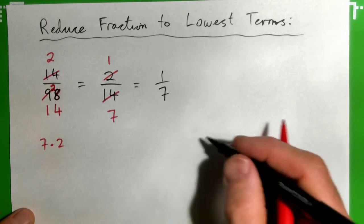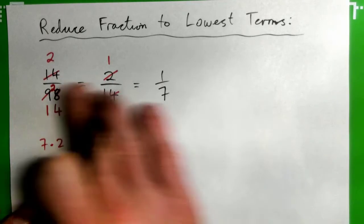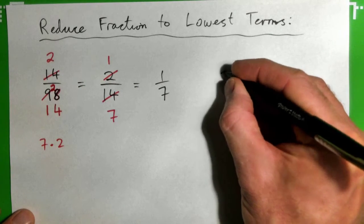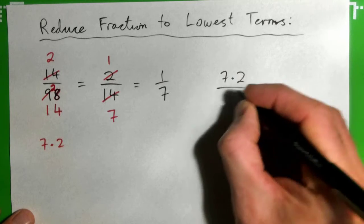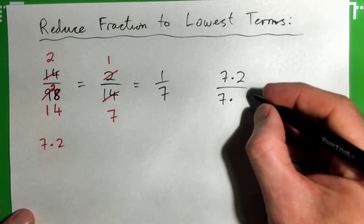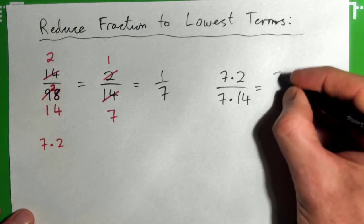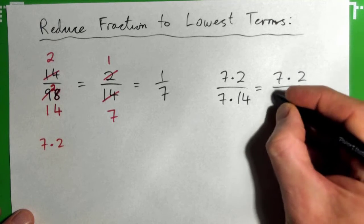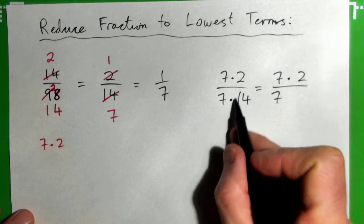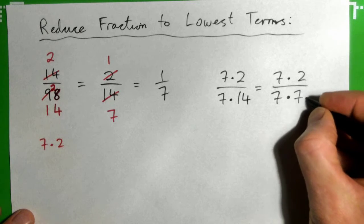So 14 over 98 is the same thing as 1 over 7. Another way we could have done it is to factorize. 14 could have been written 7 times 2, and 98 could have been written 7 times 14, and you could have broken that even further. So you could get 7 times 2 over 7, and then this 14 could be written also 7 times 2.